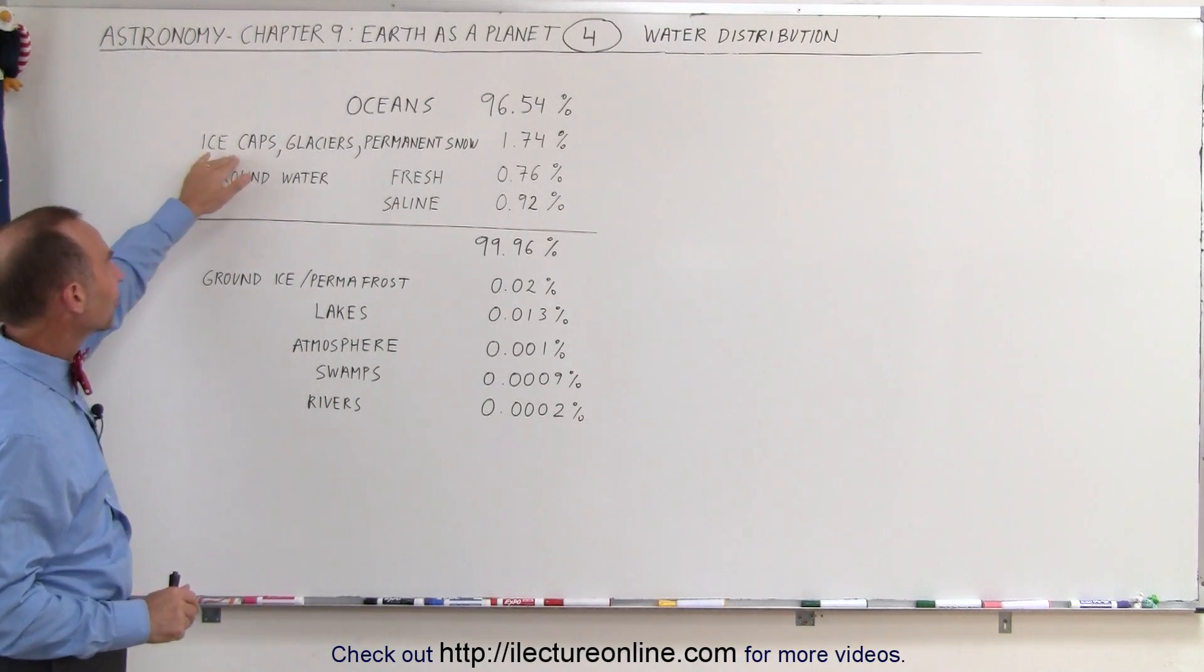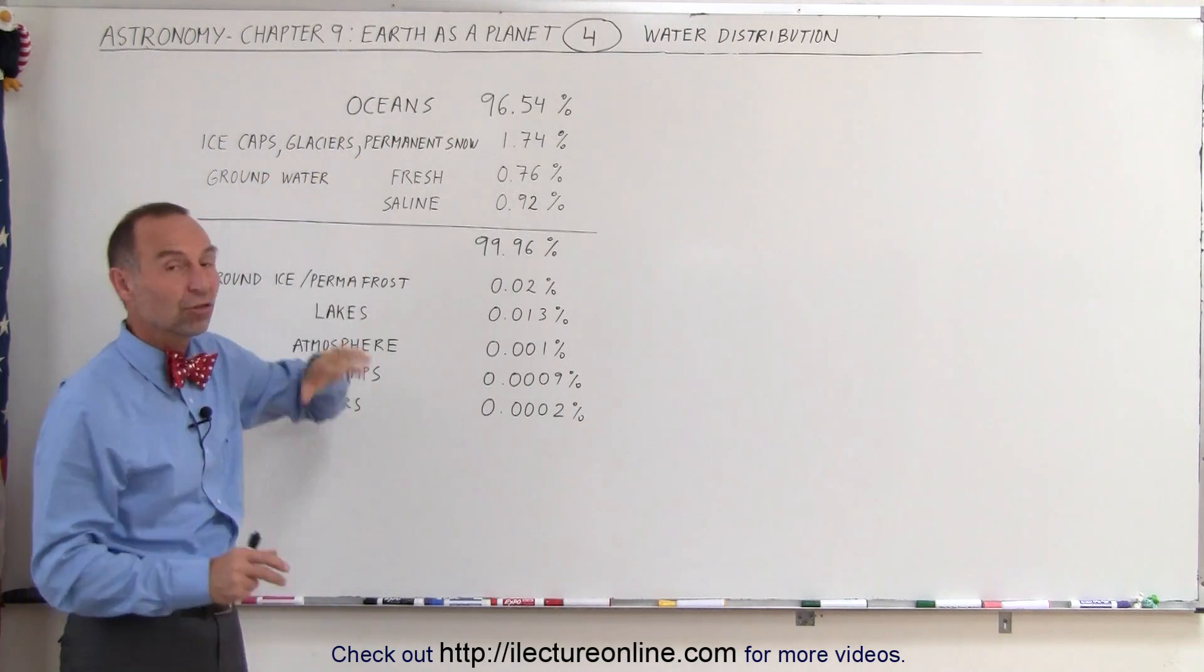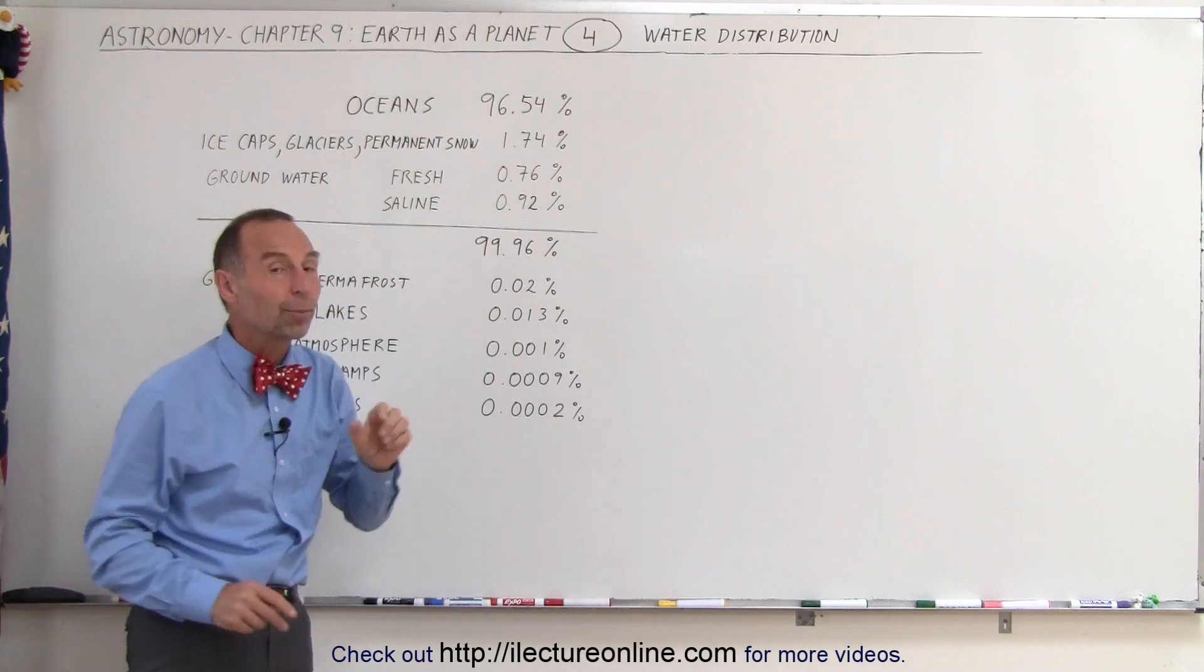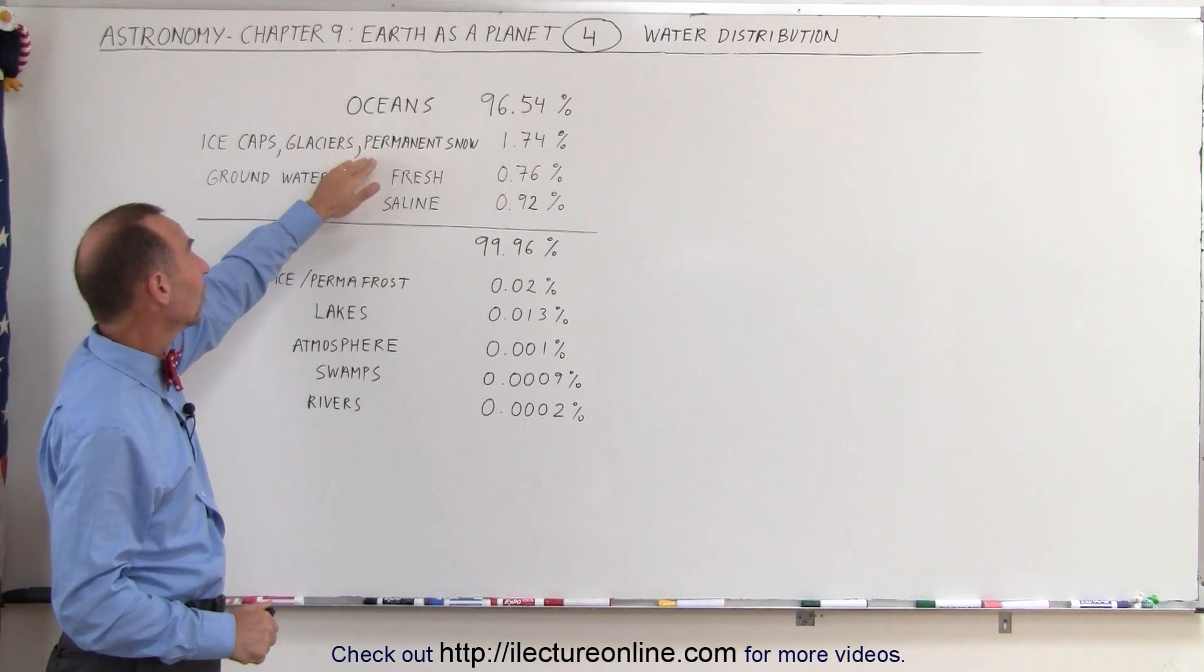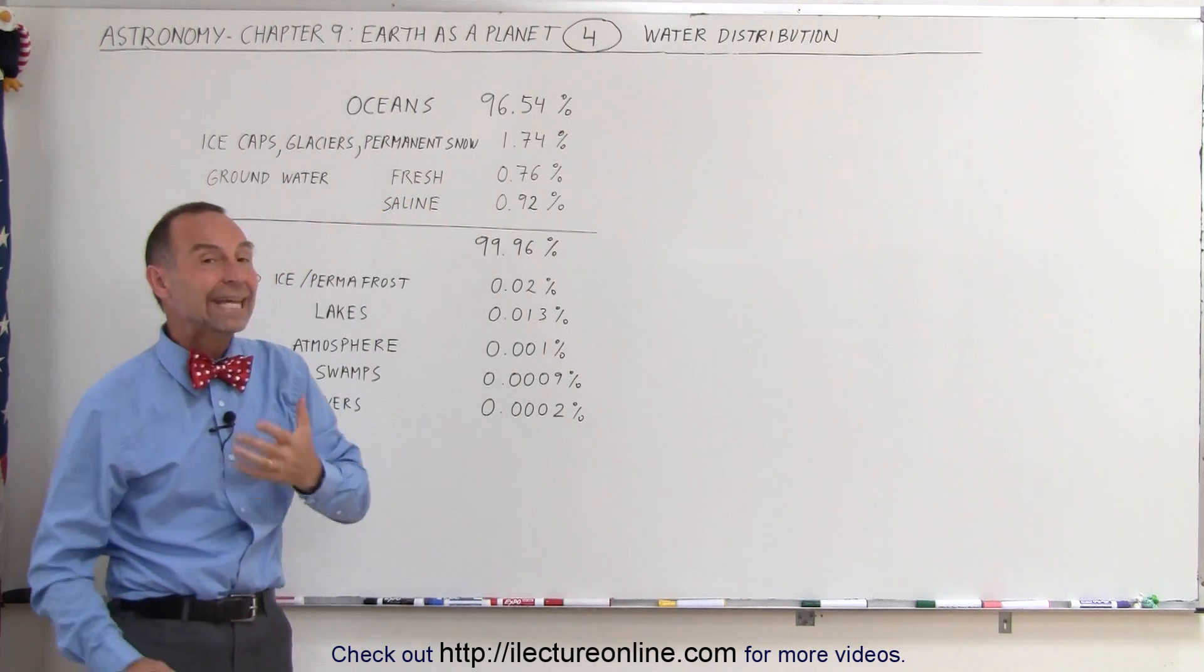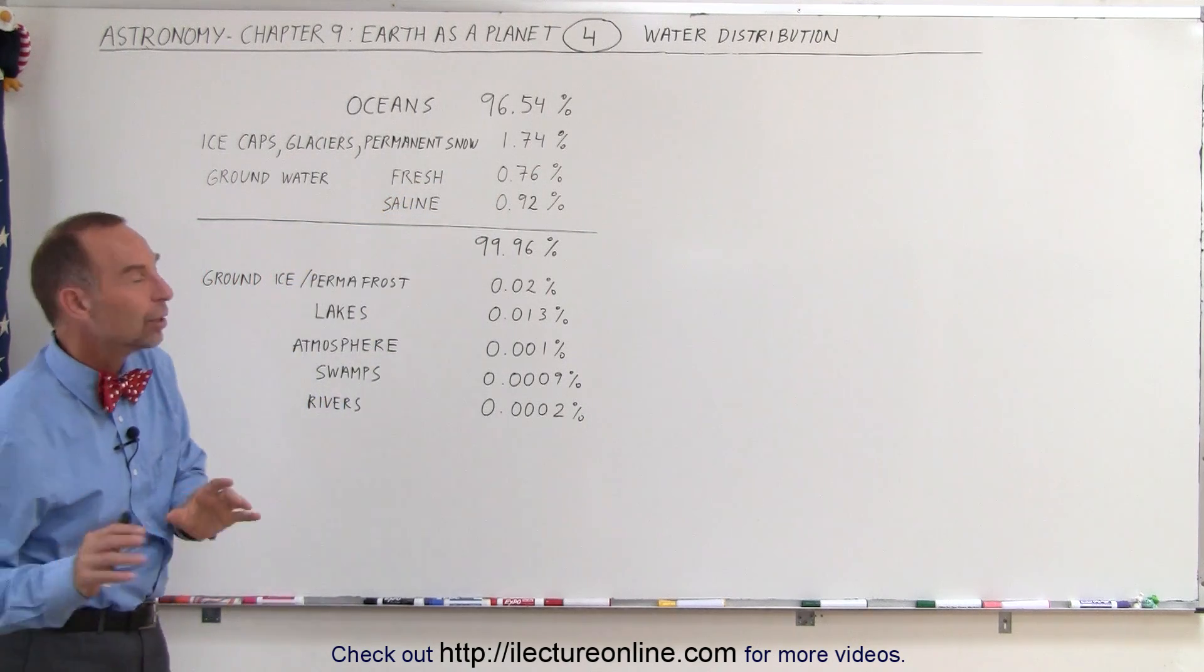On top of that, the ice caps, the glaciers, and any permanent snow that are on top of the mountain ranges account for another 1.74%. So when you combine the oceans and the glaciers and the ice caps together, we're now at over 98% of all the water contained within those two regions.